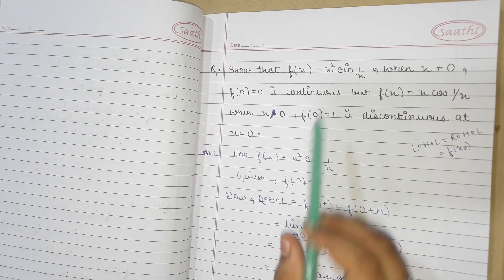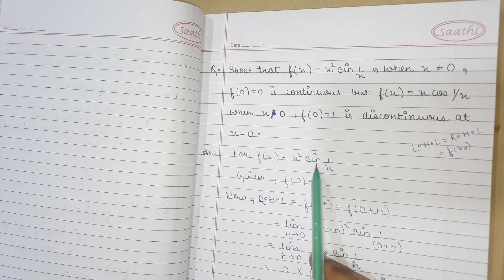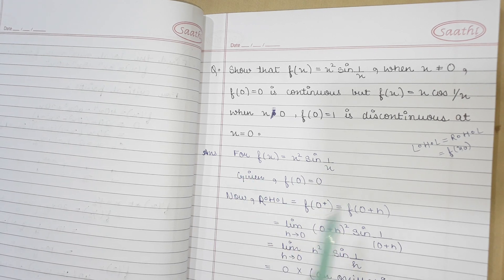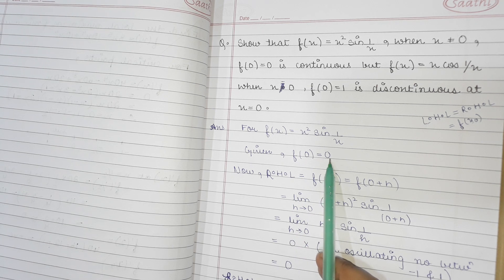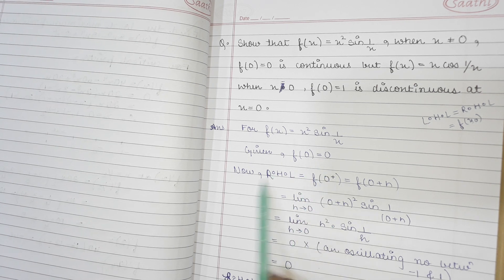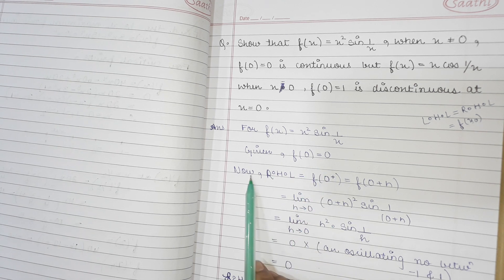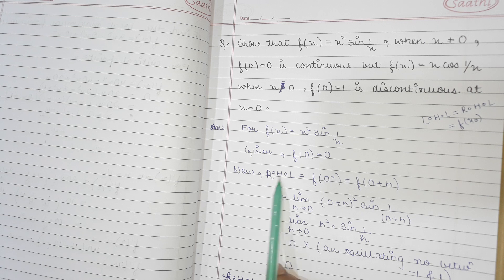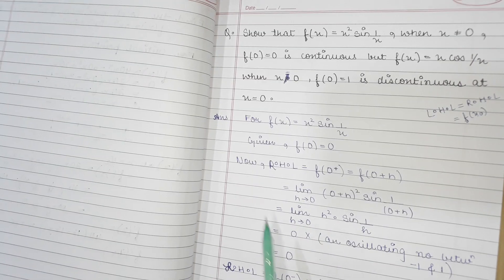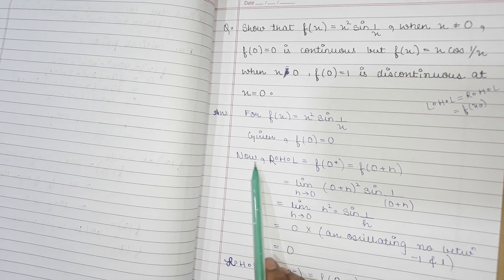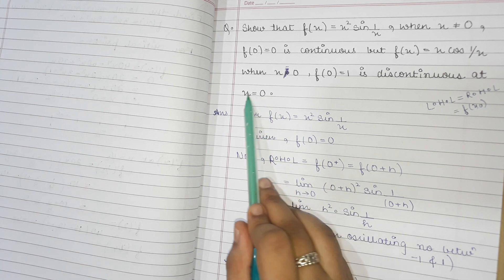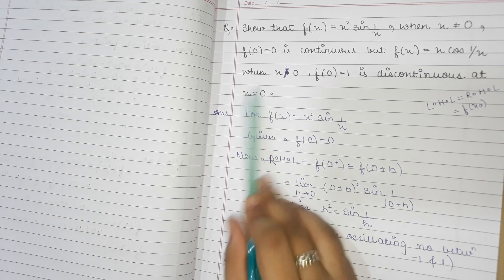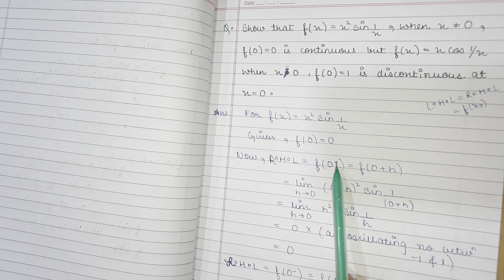Given that f(x) = x²·sin(1/x). First we will check this function. Given is that f(0) = 0, so f(0) = 0. Now we have to compute the limit — that is, LHL or RHL. We will find the RHL first. For RHL, our point is x₀ = 0, so we compute the limit as h tends to 0 of f(0 + h).